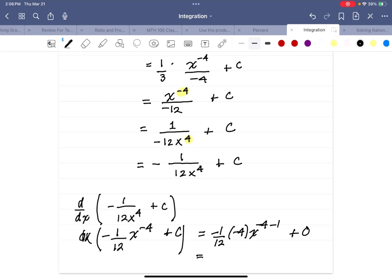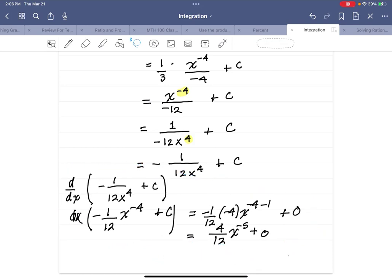Clean up a little bit. A negative and a negative. So we've got a negative here, a negative here. That's going to be a positive. 4/12ths x to the negative 5 plus 0. And if I rewrite that, well, 4/12ths is a third, right? So that's 1 over 3. And the x to the fifth will go down to the denominator. And of course, plus 0, I don't need to write anymore.